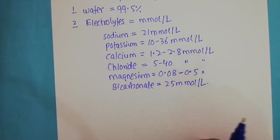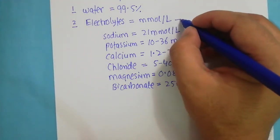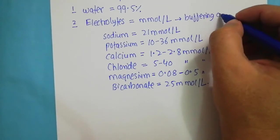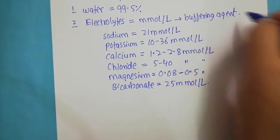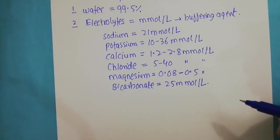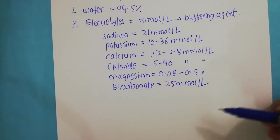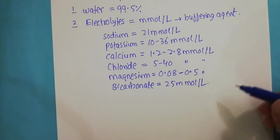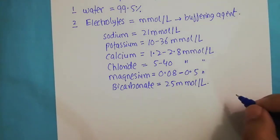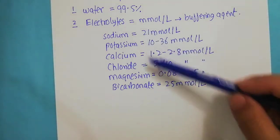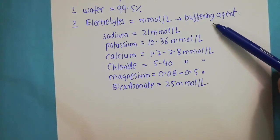The most important function of these electrolytes in the saliva is that they act as buffering agents. If you look at the composition of the saliva, you find a lot of proteins and enzymes, and for the proper functioning of these proteins and enzymes you need a particular pH. These electrolytes are ensuring a buffered environment in which these enzymes and proteins can perform their functions efficiently. These different kinds of electrolytes act as buffering agents in the saliva.